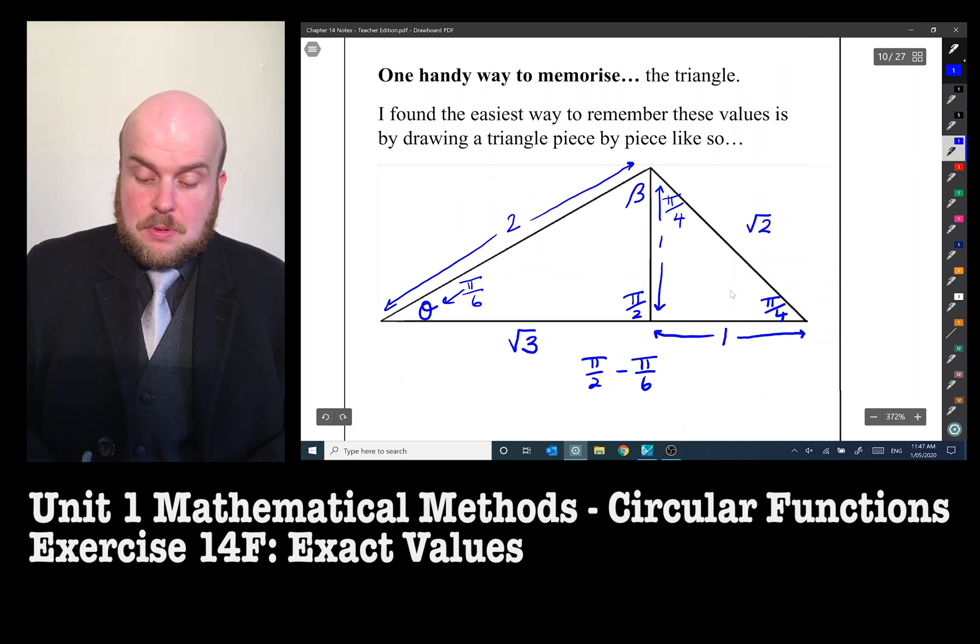So you need to make sure that all of my denominators are the same. So that's going to be three pi on six take away pi on six. That's equal to two pi on six, which is equal to pi on three.